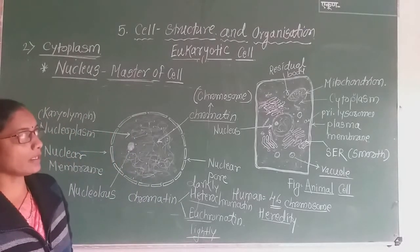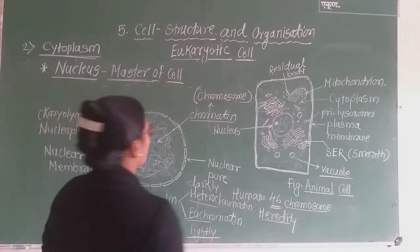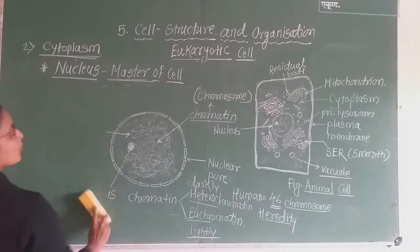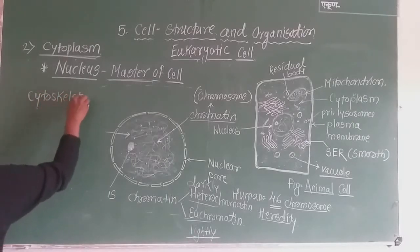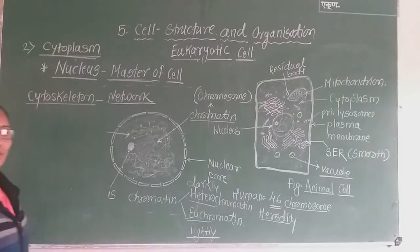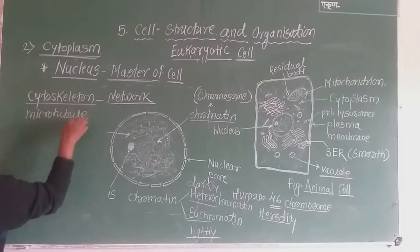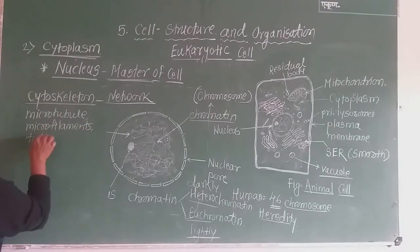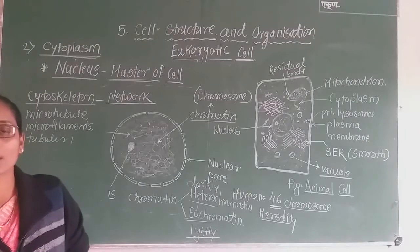These are the major cell organelles present in the animal cell. Along with these, there are certain other structures also present. For example, the cytoskeleton is present inside the cell. Cytoskeleton means a network of structures present to support the cytoplasm. It consists of microtubules, microfilaments, and tubule proteins.